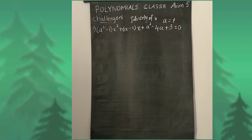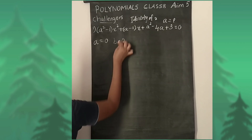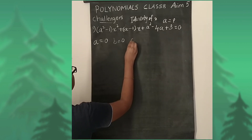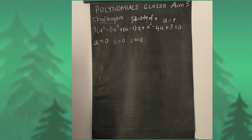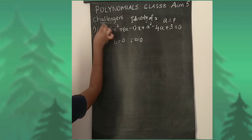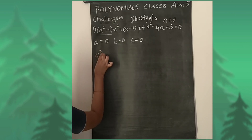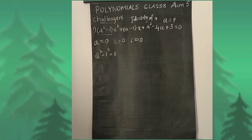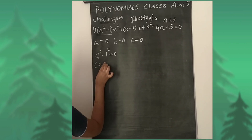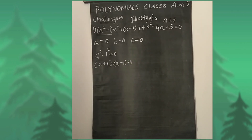Now let's solve it. Since this is an identity in x, we can say that a = 0, b = 0, and c = 0 — meaning all coefficients must be zero. Because b and c are not there in the equation. Now, taking the first factor: a² - 1. This is in the form of a² - b². If you write 1 as 1², then a² - 1² = 0.